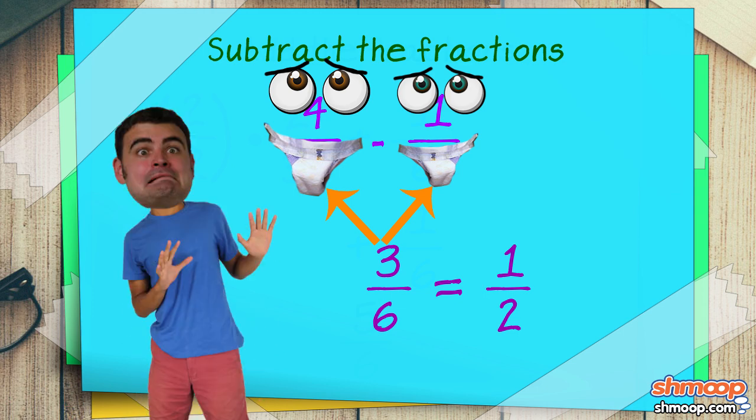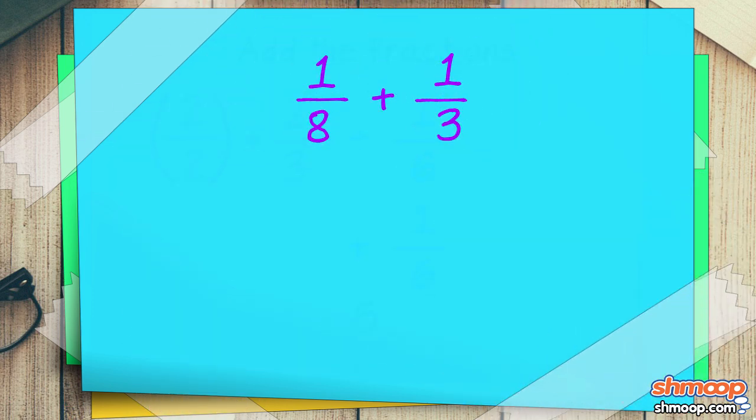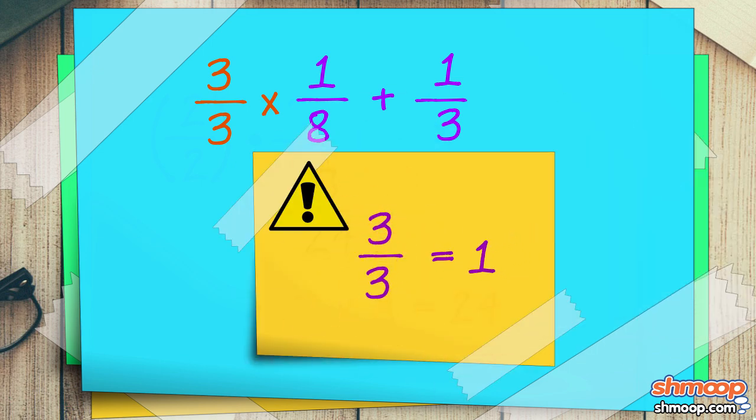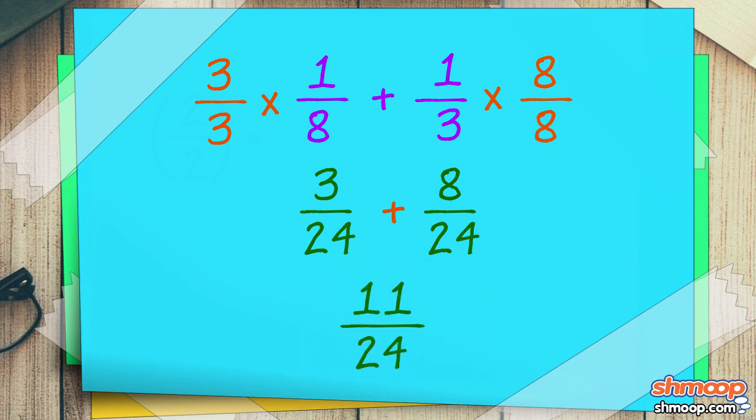Sometimes both of the denominators need to be changed. Like one-eighth plus one-third—what's the common denominator there? You gotta multiply them. Three times eight is twenty-four. We gotta multiply the three up here, and we get three-twenty-fourths. And then one-third, you gotta multiply that by eight divided by eight, and you get eight-twenty-fourths. That gives us three-twenty-fourths plus eight-twenty-fourths. And if you add the three and the eight, we get eleven-twenty-fourths. Voila.